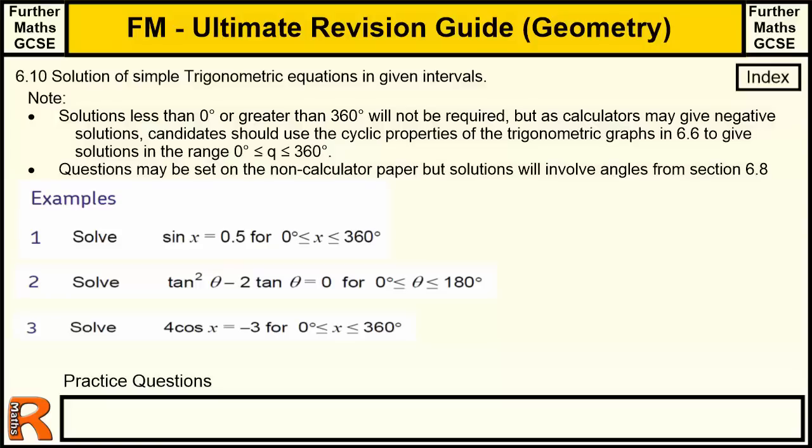6.10. Solutions of simple trigonometrical equations in a given interval. Usually 0 to 360 or maybe something shorter like 0 to 180. This is part of my ultimate revision guide for geometry. This index button here will take you back to the index for geometry. And any exam questions I've done on this topic, I will put links to down here in this practice questions bar.